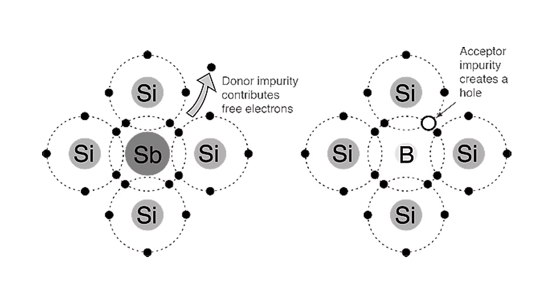This is due to silicon's energy gap. So to compensate, scientists dope silicon with other elements to control conductivity and the flow of energy, which is why silicon is used in nearly all modern microprocessors to date.